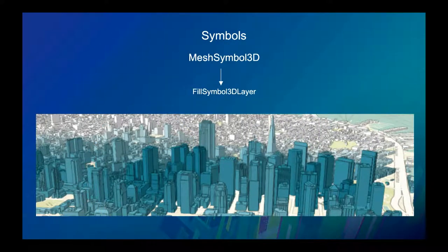We also have a Mesh Symbol 3D, which is used for scene layers. If you have buildings — and we'll show a few building demos — you'll always apply Mesh Symbol 3D. In 3D visualization, just remember that the symbol type always matches your layer geometry type, which is not always the case with 2D. That's what's nice about 3D.